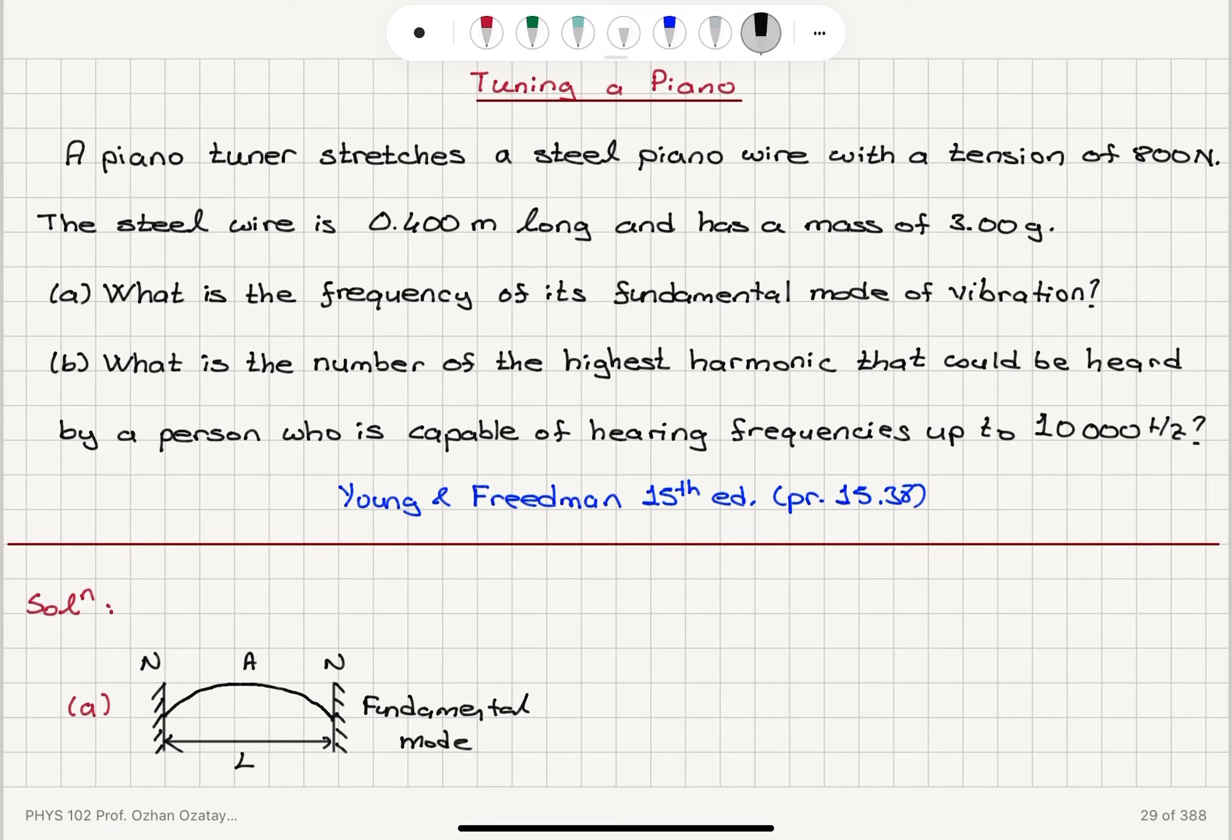Now, we're given a piano wire which has a mass per unit length mu equals m divided by l. So the mass of the wire is 3 grams, therefore it's 3 times 10 to minus 3 kilograms.